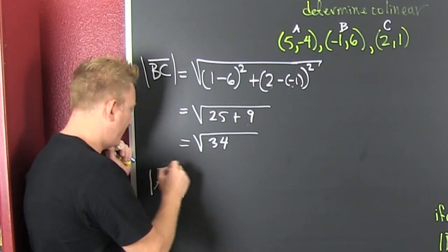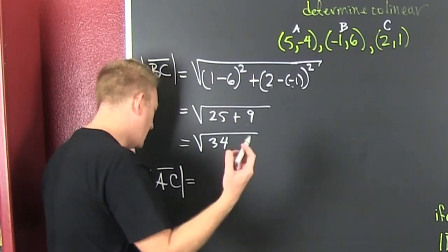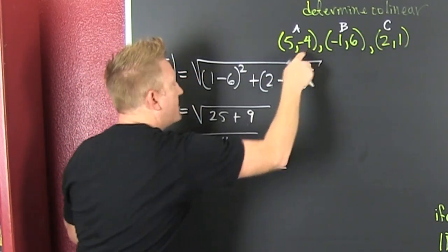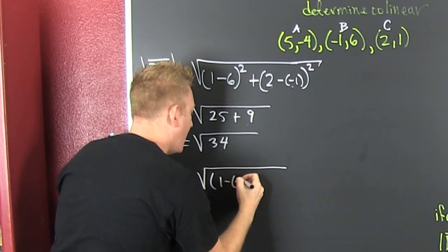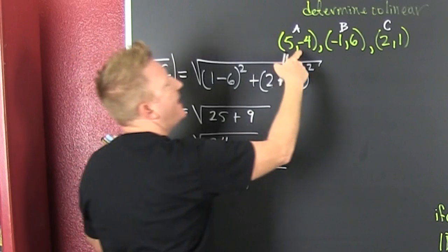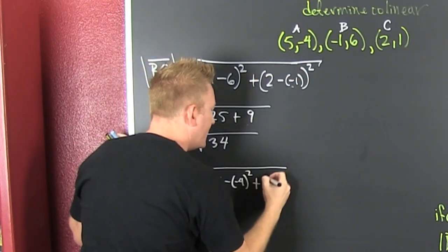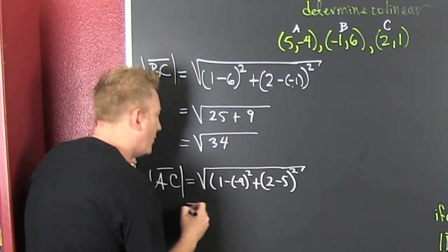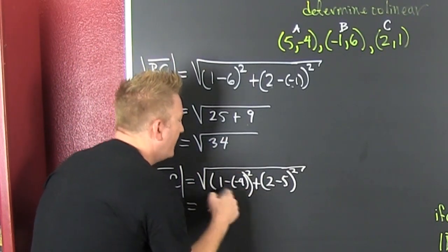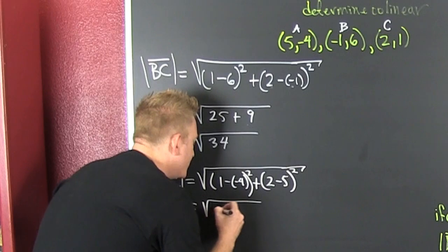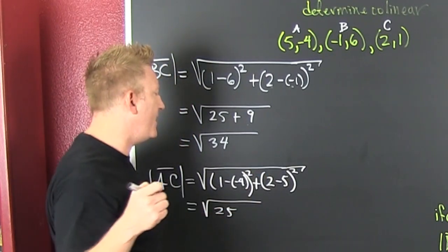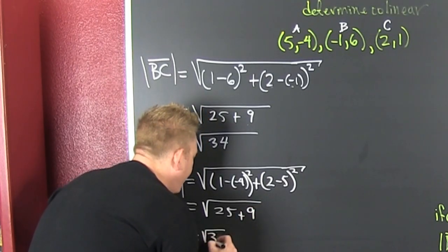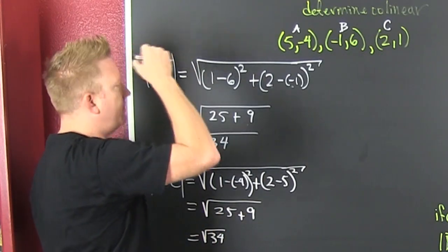What do we need now? We need AC. That's the square root of one minus a minus four squared, and then two minus five squared, and then we're squaring the thing. That's a five squared, that's the square root of 25, and then that's a minus three squared which is a nine, and then again we get the square root of 34. Does that mean that they're the same? No, I need to add these and it needs to be BA.